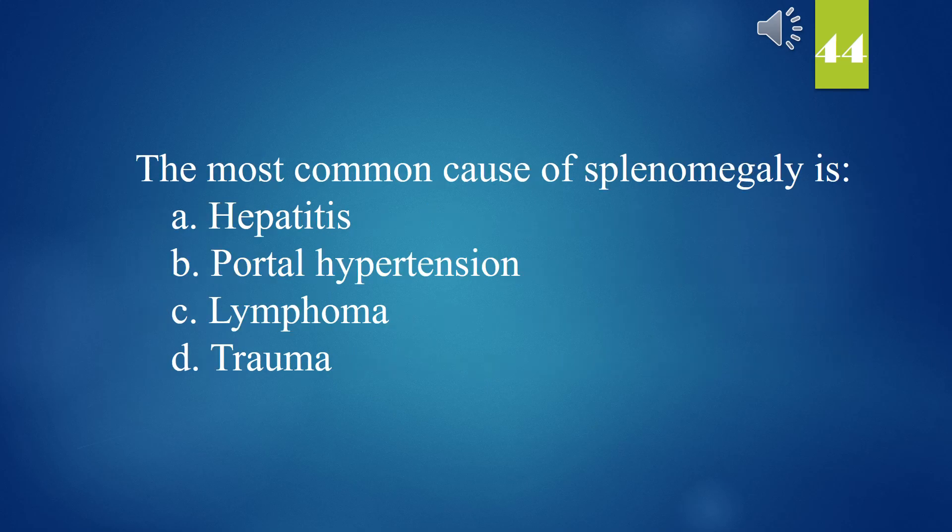The most common cause of splenomegaly is: A. Hepatitis. B. Portal hypertension. C. Lymphoma. D. Trauma. The answer is B. Portal hypertension.